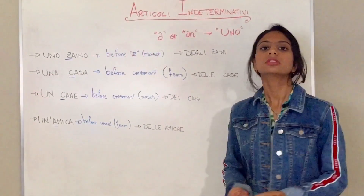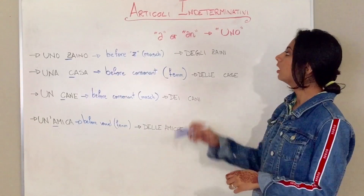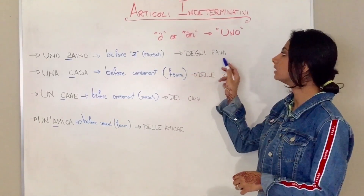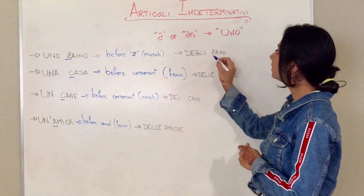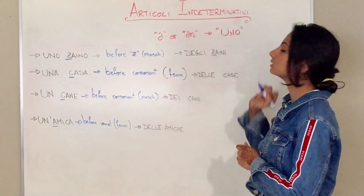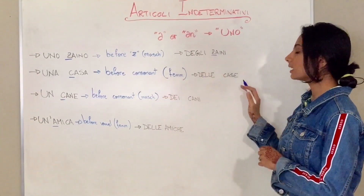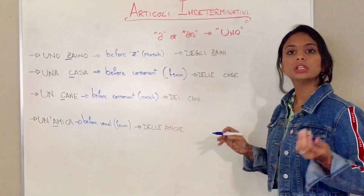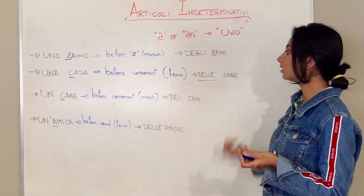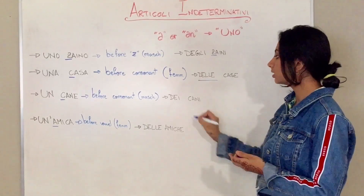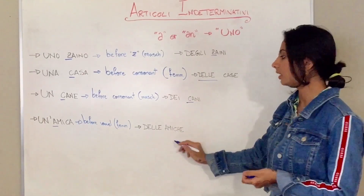Let's see the plural examples again. Degli zaini — why degli? Because there is a Z. Una casa becomes delle case — because the only plural for feminine is always delle. Dei cani — because cane starts with a consonant, so it's dei. And delle amiche — because it's feminine, so again it's delle.